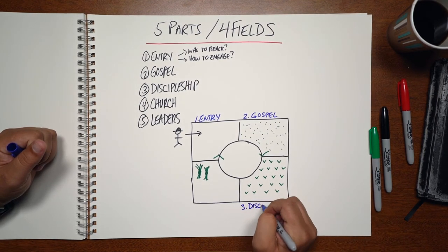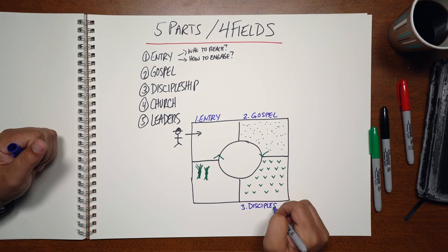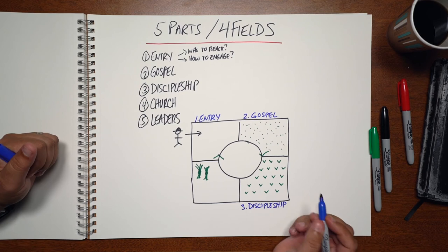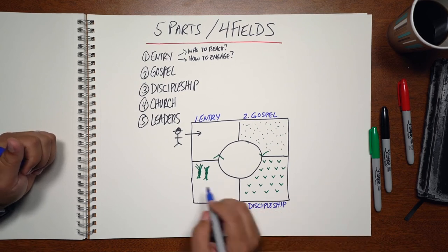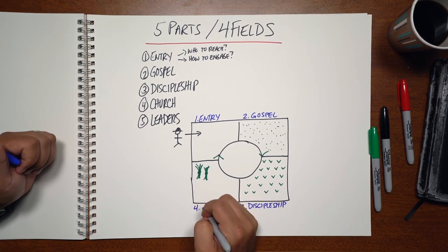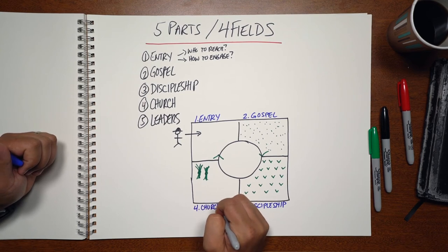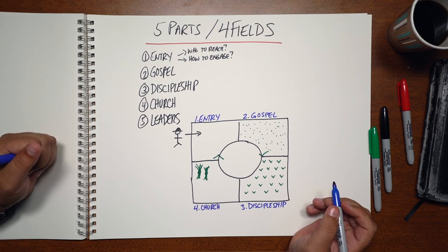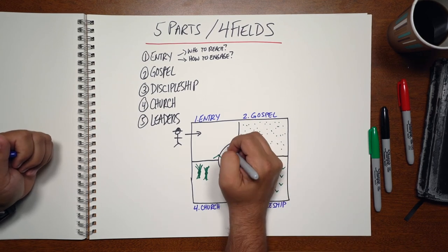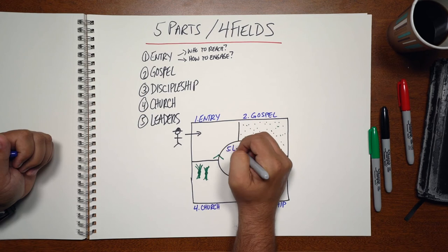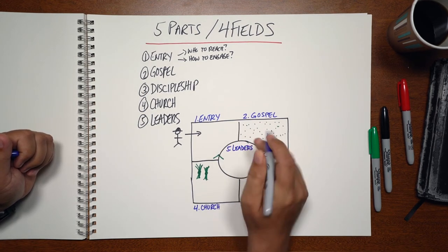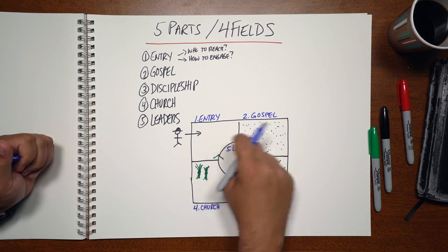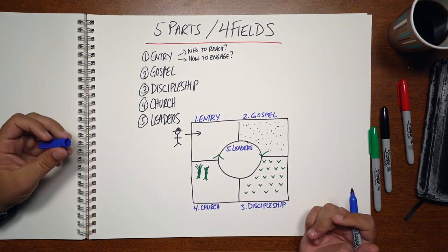The third is discipleship — how do we help new believers grow and become healthy followers of Jesus who obey him, including his Great Commission? The fourth field, the harvest field, is church — how do we gather them together into a biblical community the Bible calls church so they can be everything God's called them to be? And then this middle portion is leaders — how we see this whole thing reproduce downstream by identifying and raising up leaders.